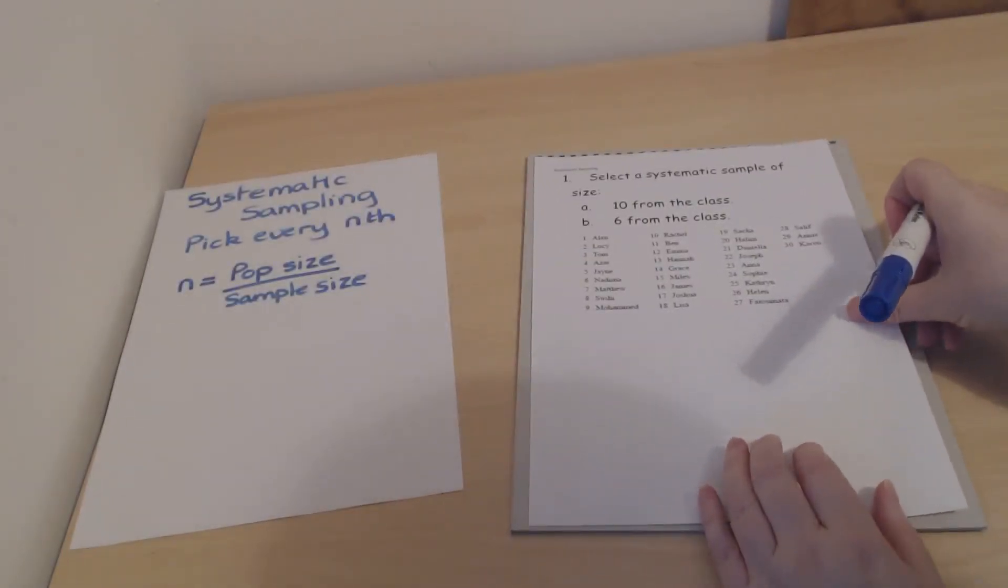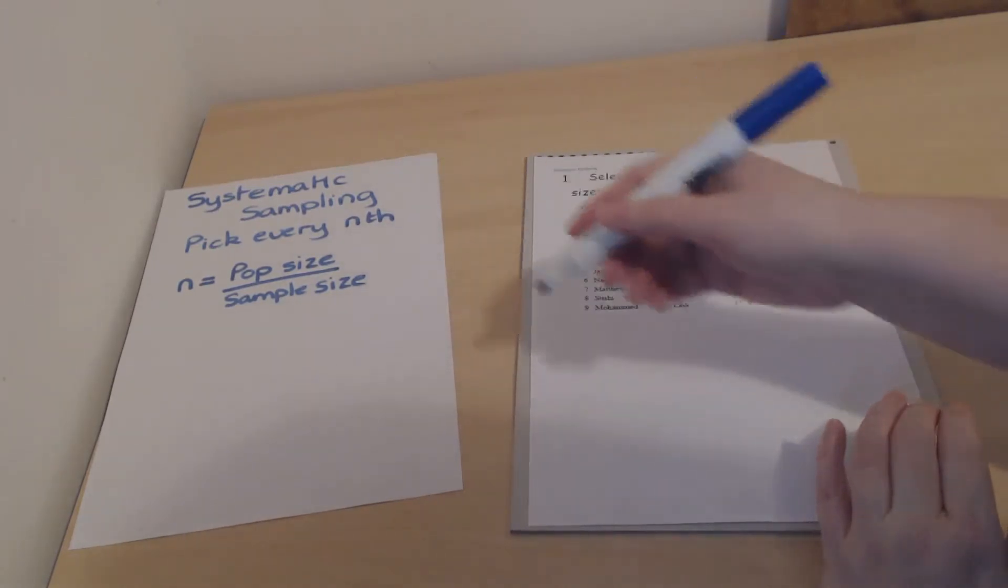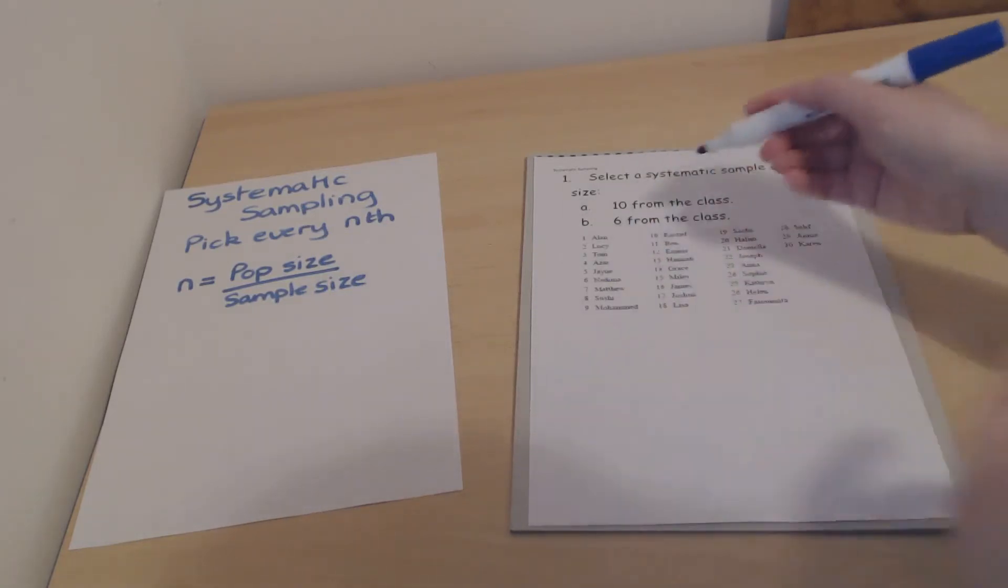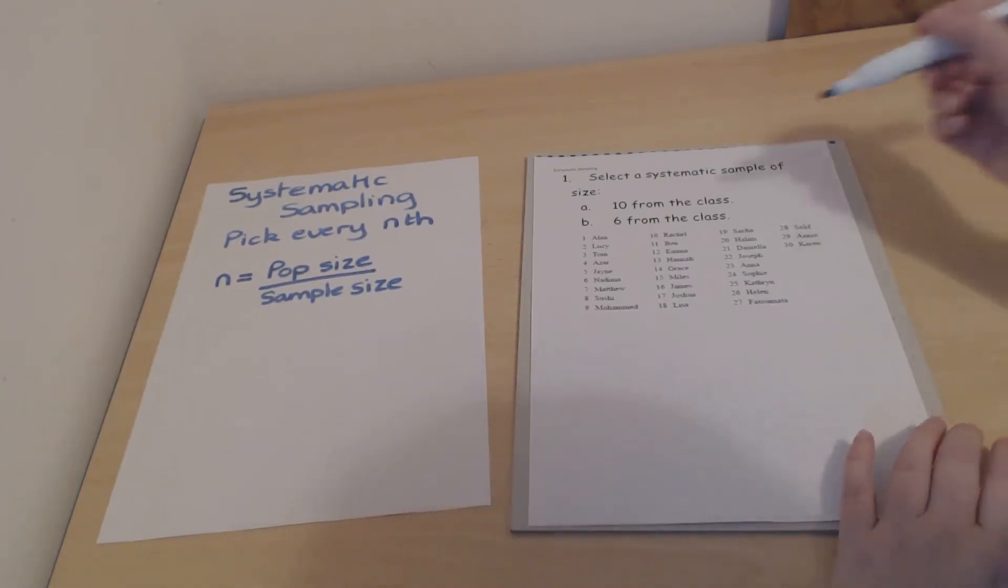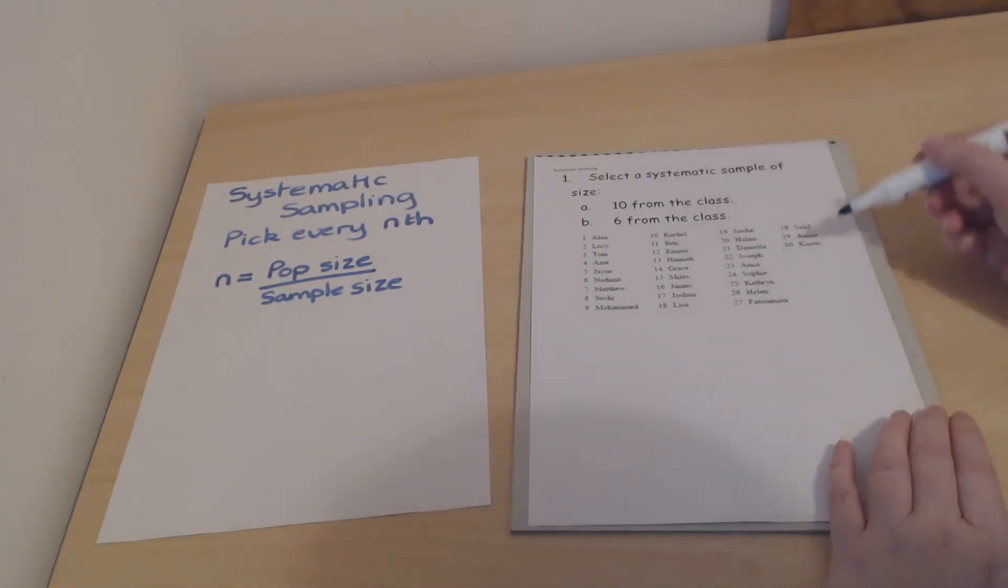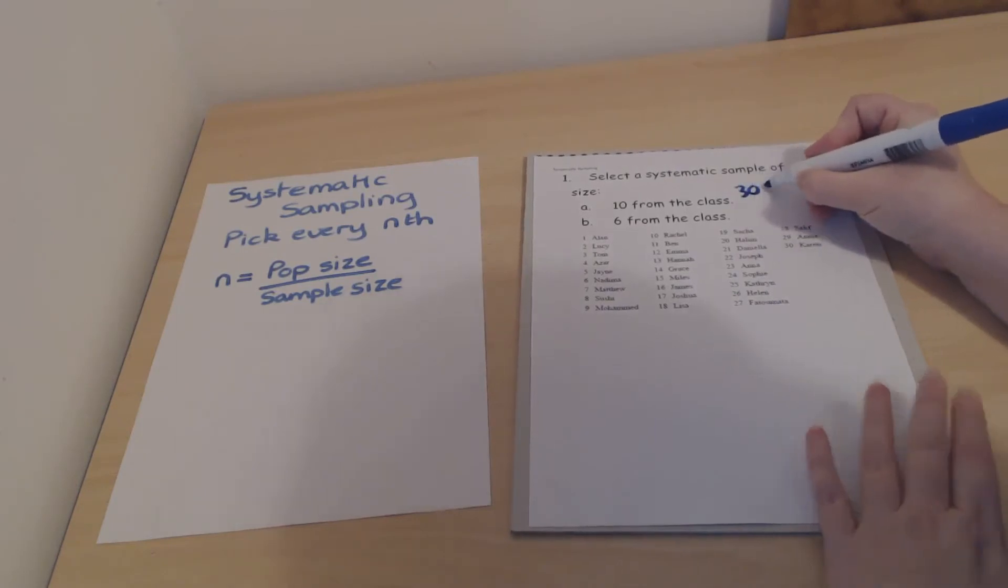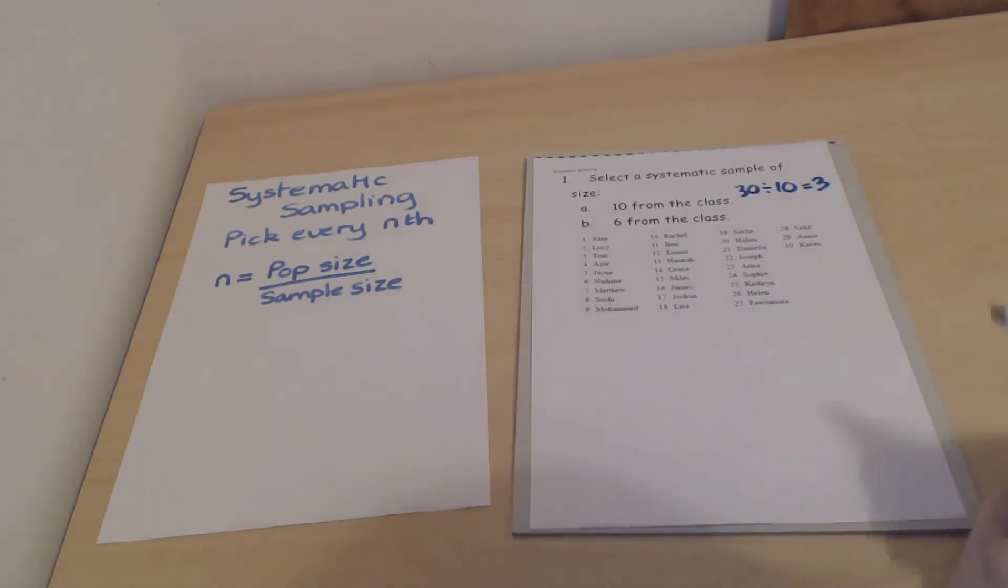Here they're asking us to pick a systematic sample of 10 from this class. Just like with random sampling, you have to have your population numbered so that you can pick them. We want 10 in the first sample. There's 30 in the group altogether, so 30 divided by 10 is 3. That means we're going to pick every third person.